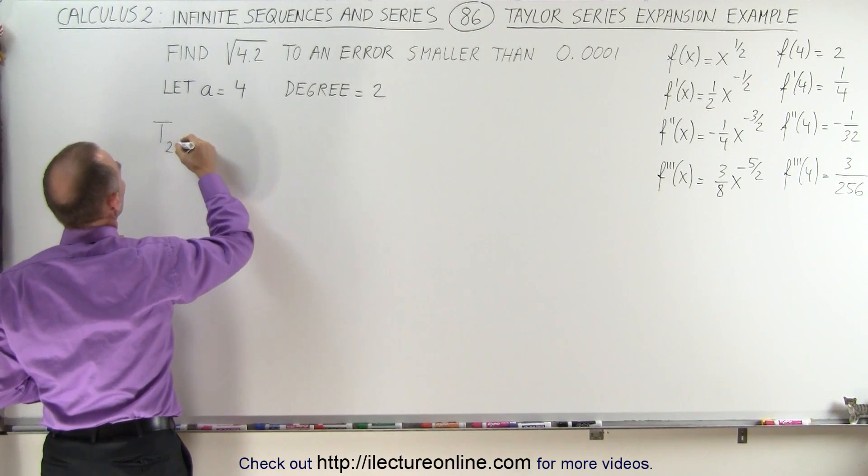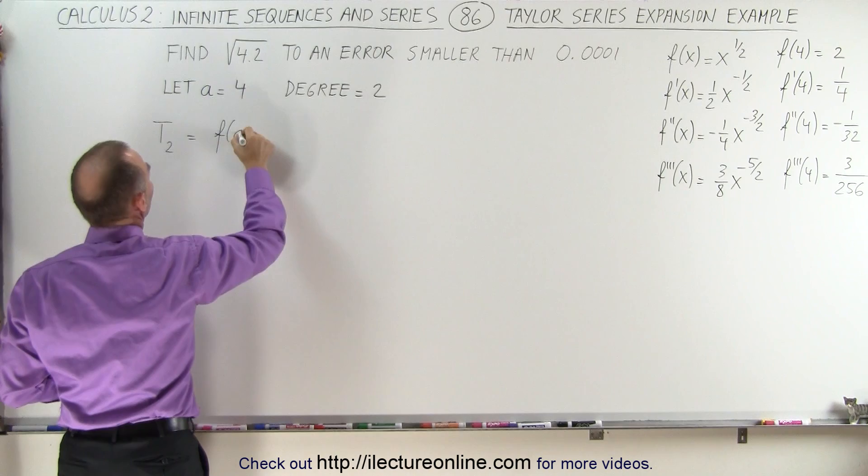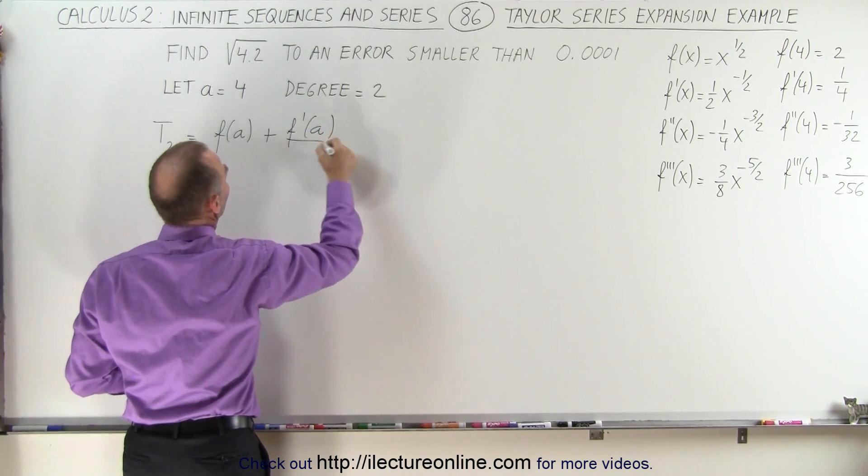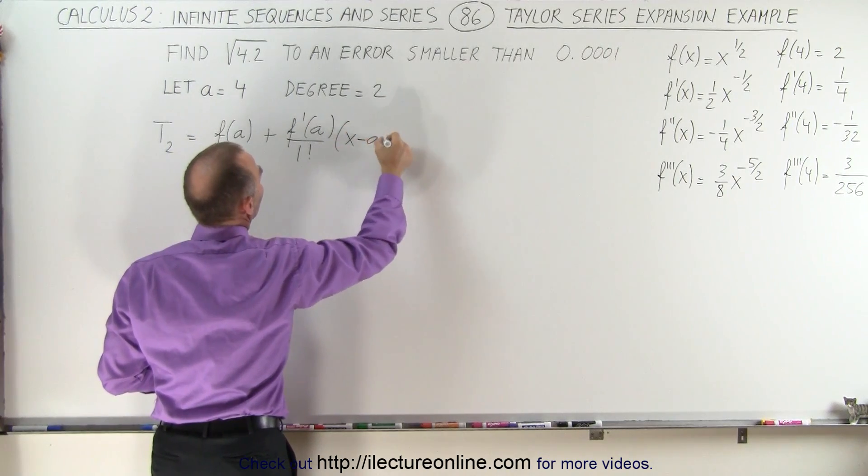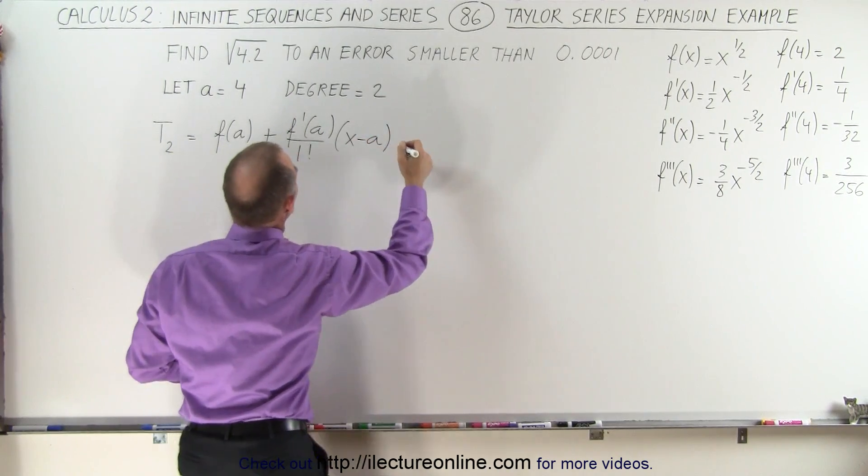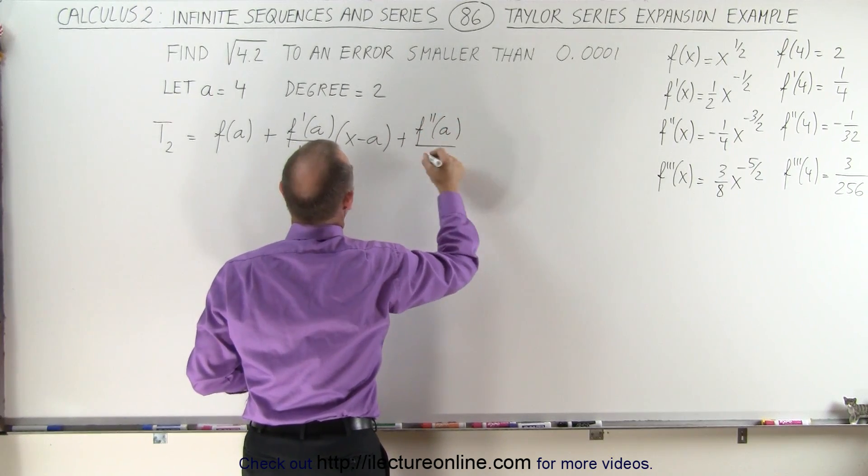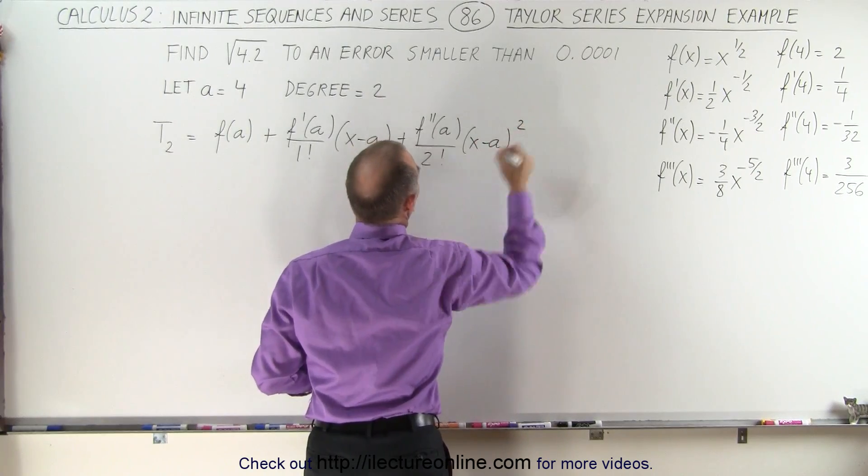The expansion is going to look as follows: f of a plus f prime of a divided by 1 factorial times x minus a to the first power plus f double prime of a over 2 factorial times x minus a to the second power.